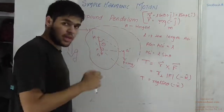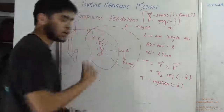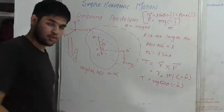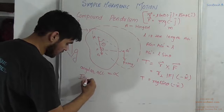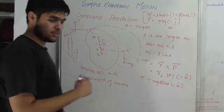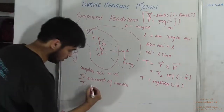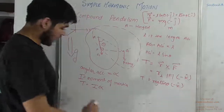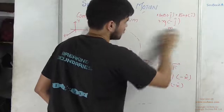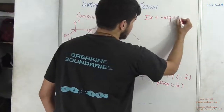Now, from the chapter on rotation, torque is equal to the product of moment of inertia I and angular acceleration alpha. So torque = I × alpha. Equating both expressions for torque, we get: I × alpha = -mgL sin theta.